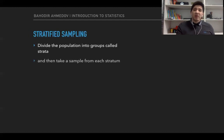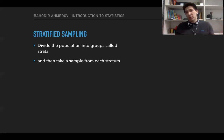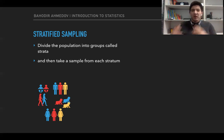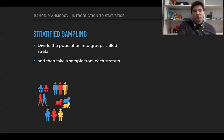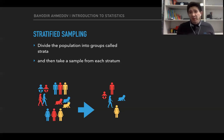Stratified sampling is when we split the population into different groups by different categories called strata. Once we've created the strata, we choose members from each stratum randomly. For example, our population may be split into categories like children, youngsters, males, females, and elderly people. We then choose members from each stratum randomly — for example, one male, one child, one female randomly, and so on.